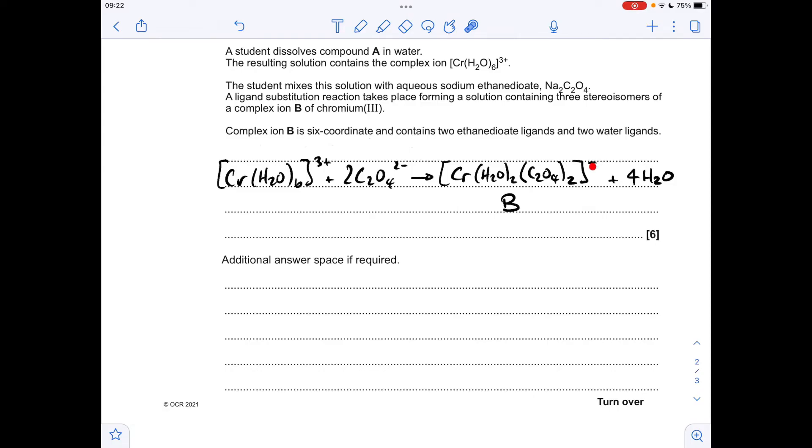The charge of B, I'll just quickly explain that. So chromium's plus 3, obviously H2O's neutral. Each of the ethane diuate ligands are 2-, so you've got plus 3 with effectively 4-, so you're left with that 1- charge.